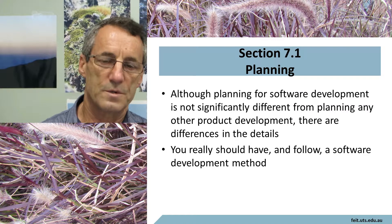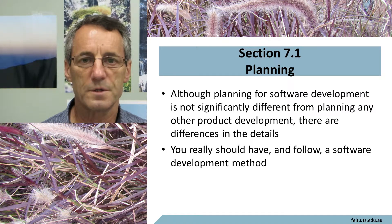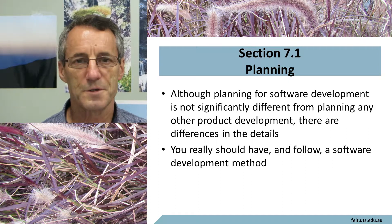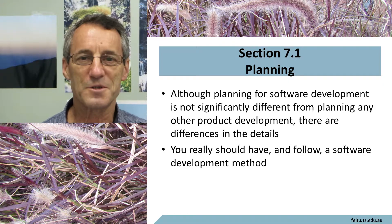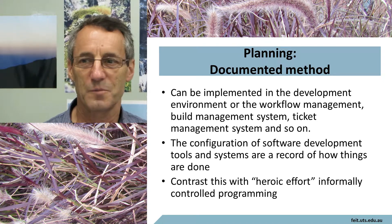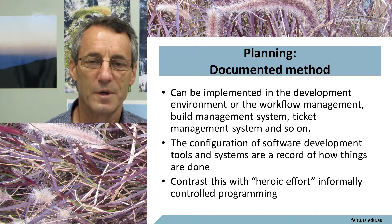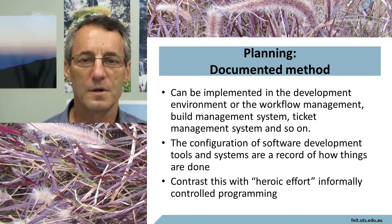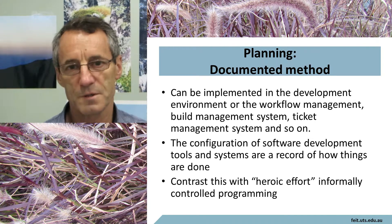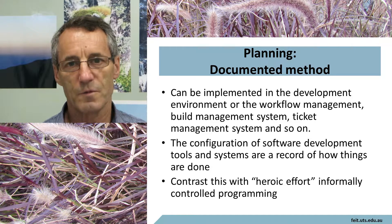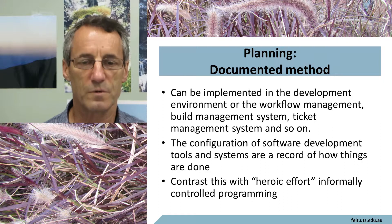Now, as it was in Section 4.1, Section 7.1 essentially says you really ought to have a software development method — something that's documented or has some permanent existence. Your software development method doesn't necessarily have to live in a manual sitting on a shelf, as many of them do. It can be implemented in, for example, your software development environment, your build files, your workflow system, your ticket management systems. All of these things do constitute some form of documentation — some form of external record of how things are done.